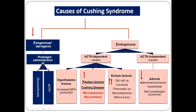ACTH-dependent causes include hypothalamic lesions with increased CRH production, pituitary lesions — which is Cushing disease, due to micro- or macro-adenoma of the anterior pituitary with increased ACTH levels — and ectopic lesions such as small cell carcinoma, carcinoid of the thymus, pancreatic carcinoma, neuroblastoma, and Wilms tumor, all producing ectopic ACTH.